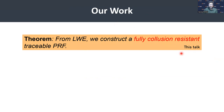This led us to our work, and this is the topic of this talk. We prove that from LWE we can construct a fully collusion-resistant traceable PRF. We provide an algorithm to generically augment a single-key traceable PRF to a fully collusion-resistant traceable PRF, and our identity space is polynomial. Collusion resistance is actually meaningful and non-trivial to achieve even when the identity space is polynomial, because the existing single-key construction is completely insecure even in the presence of two identities queried by the adversary.